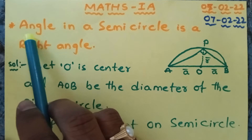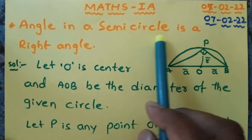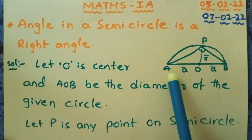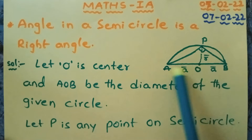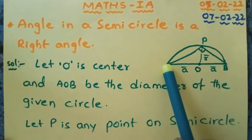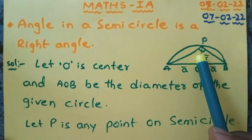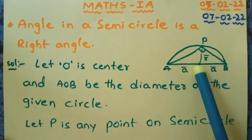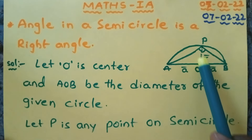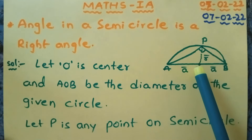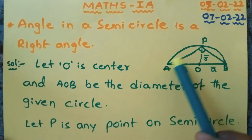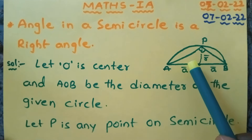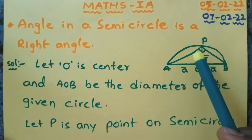Today the question is: Angle in a semi-circle is a right angle. Here, APB is the semi-circle, and any one angle in it is a right angle. APB is the semi-circle, OE is the center, and OA, OB, OP are the radii of the semi-circle. Here I am joining AP and PB, so triangle APB is formed. What we have to show is that the angle in this semi-circle is a right angle.